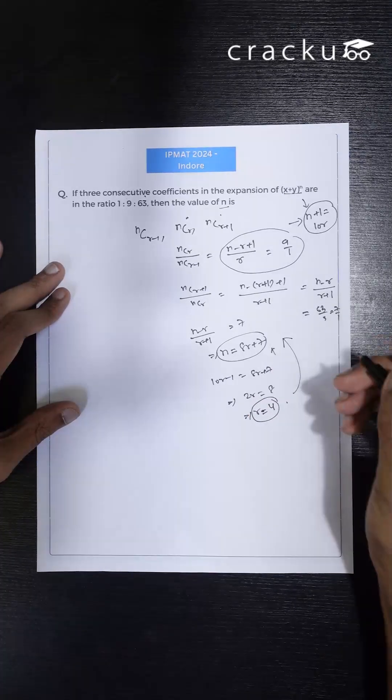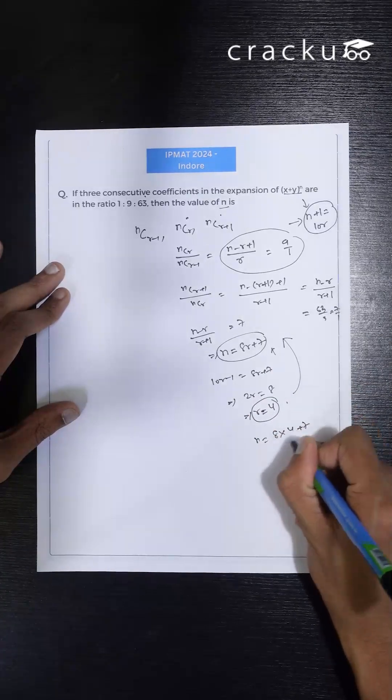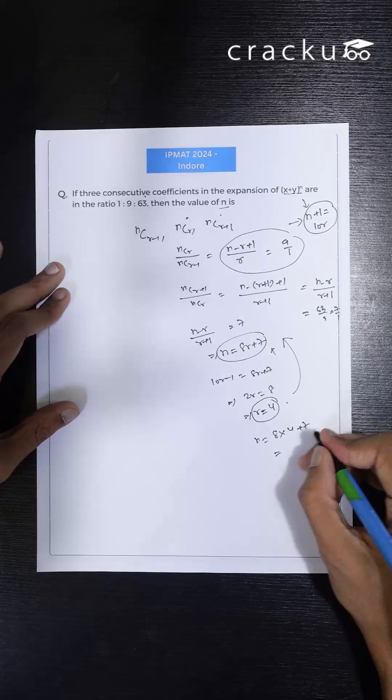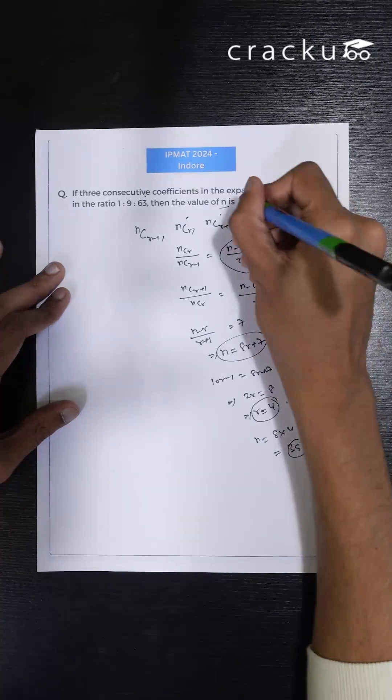If we put r=4 over here, the value of n is 8×4+7. 8 fours are 32, 32+7 is 39. So the value of n is 39.